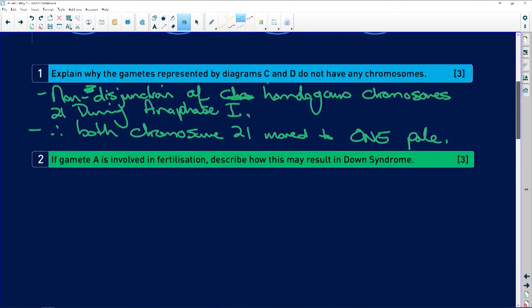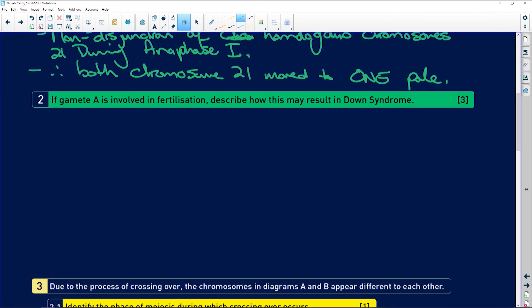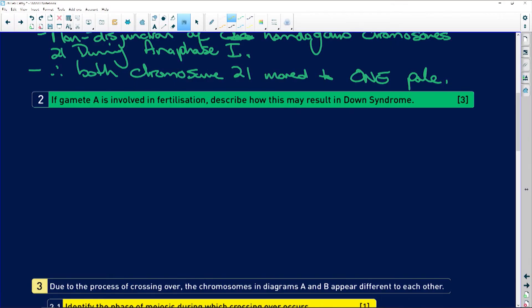So non-disjunction of homologous chromosome 21 during anaphase 1. That's where the issue came. And therefore, both chromosomes 21 moved to one pole. How easy is that? But they didn't divide. They just decided, we like each other too much. And if you remember our joke that we did right in the beginning of saying, it's my sister chromatid. That's exactly what happens here. They decide, we're staying together. We are not separating during anaphase. Remember, anaphase is the apart phase.